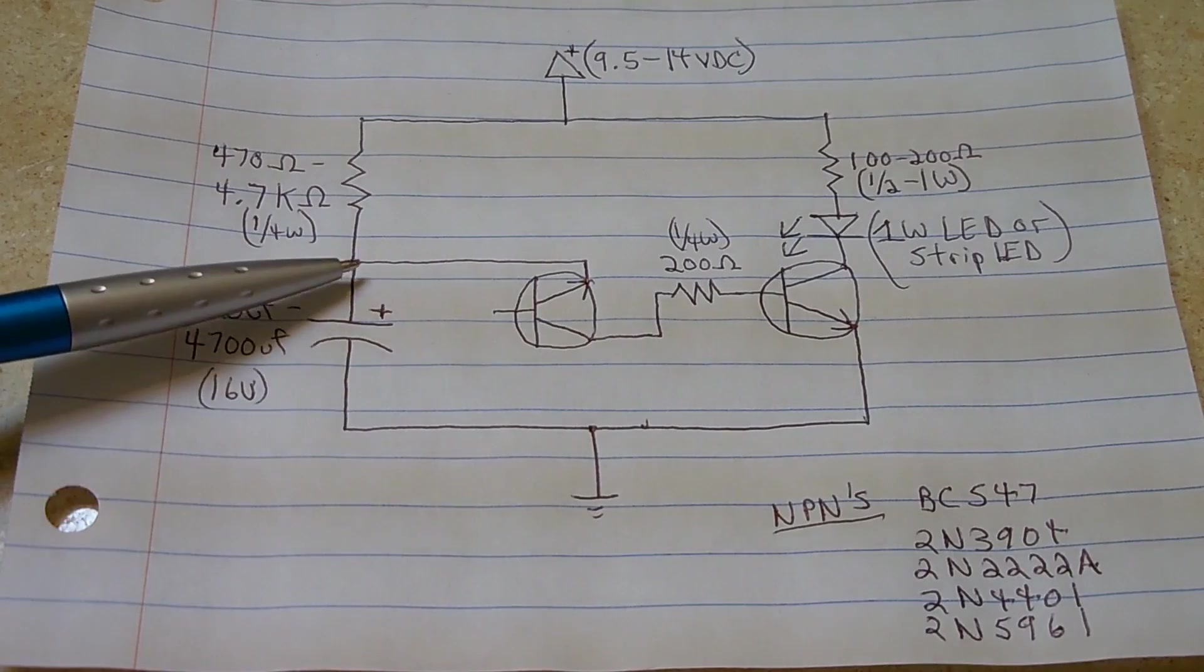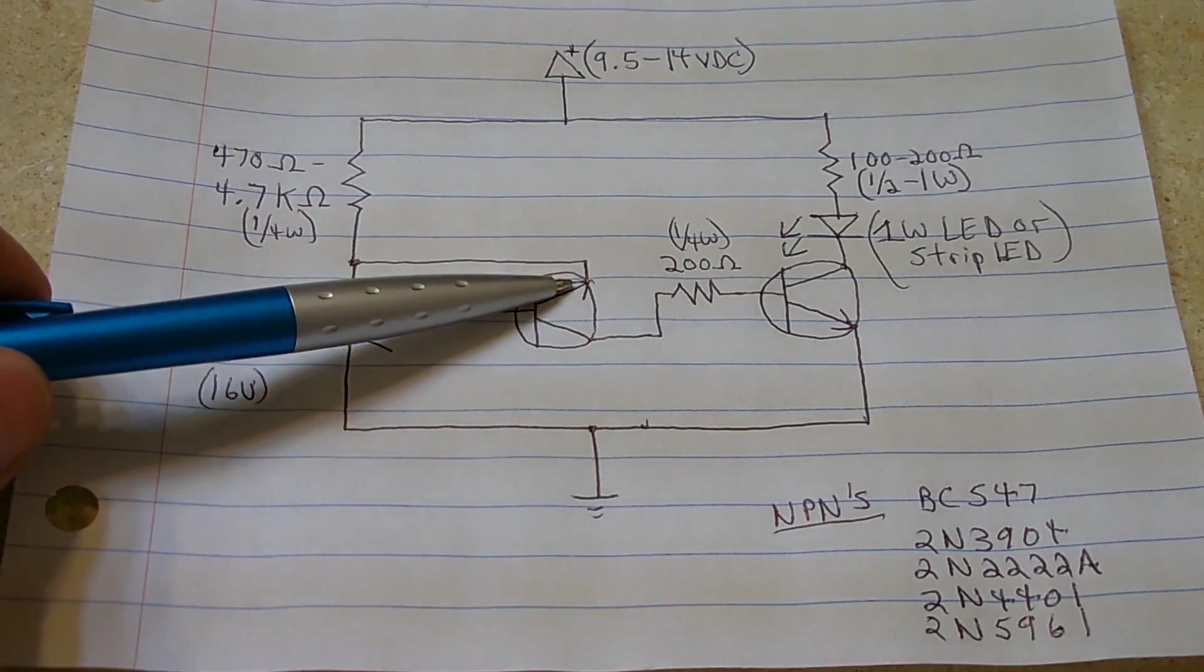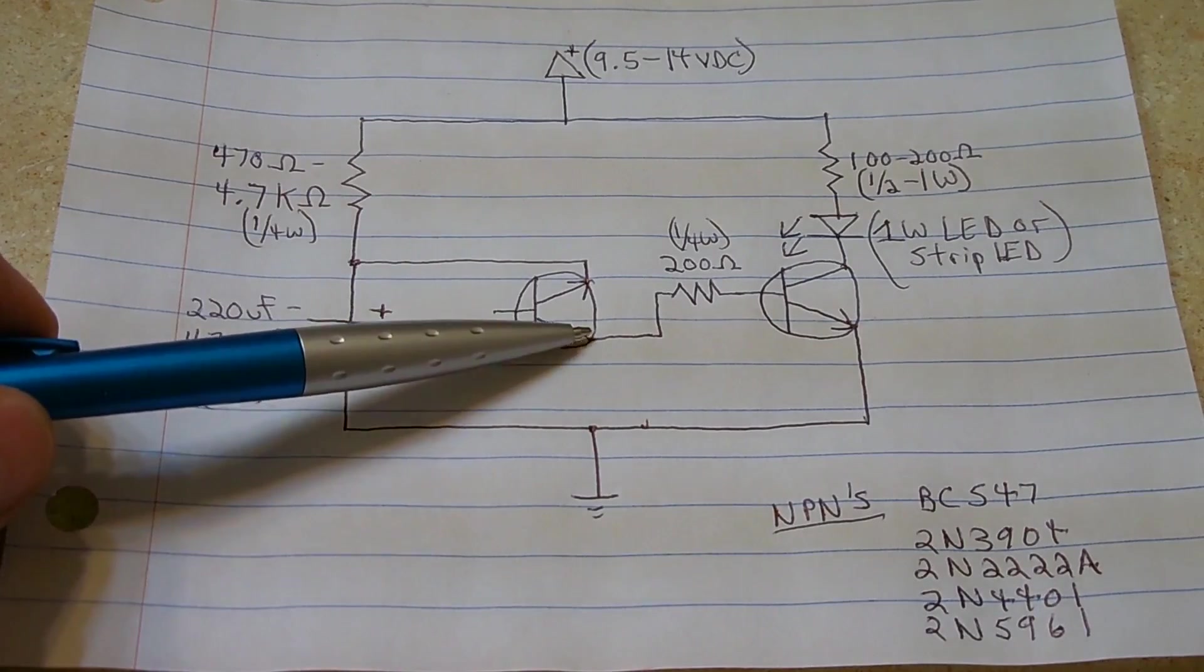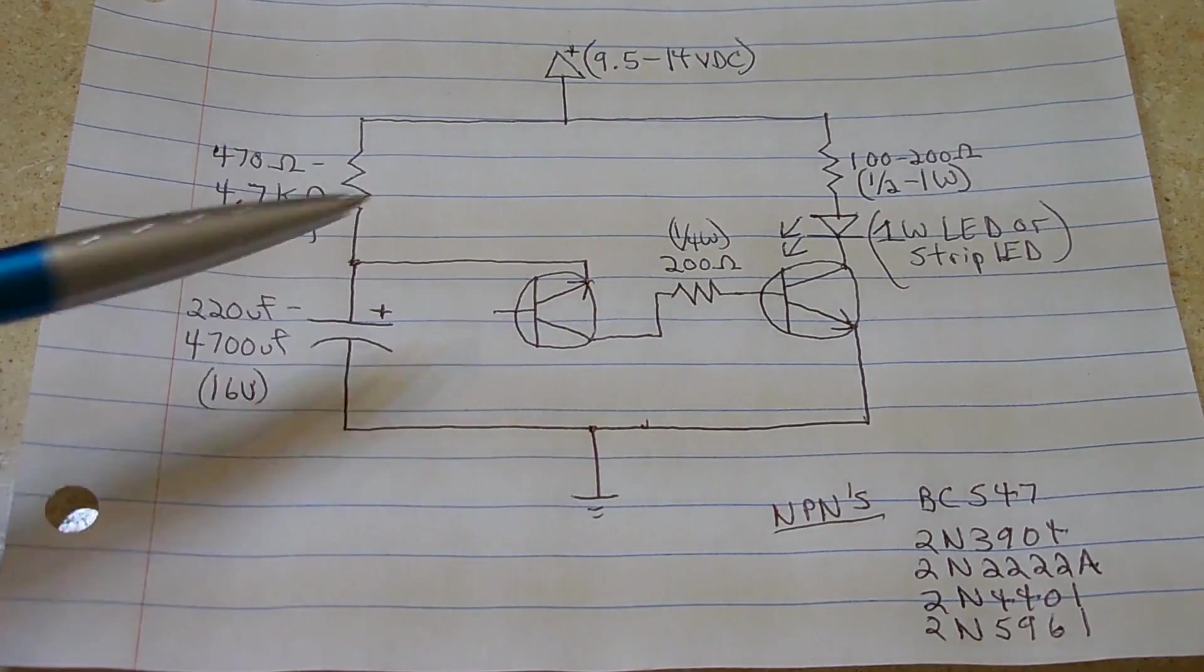Once the voltage climbs to a certain point, this will break down, allowing the current to flow through again. And the cycle repeats over and over.